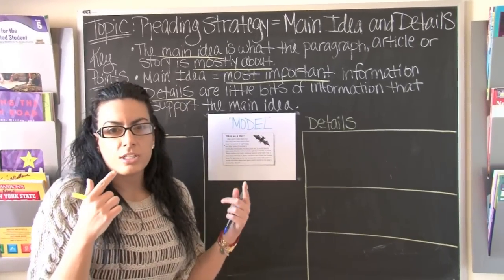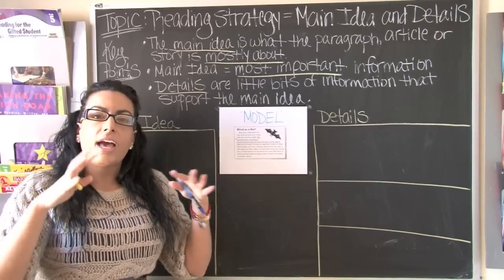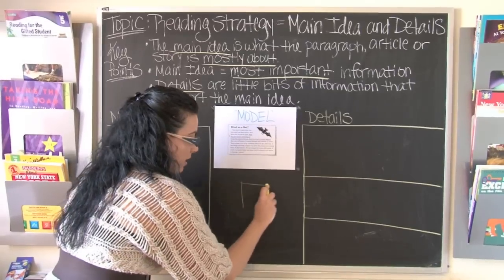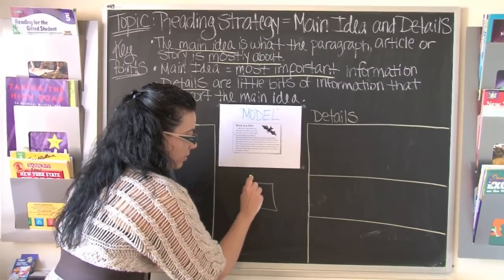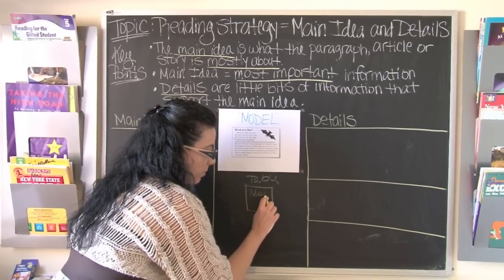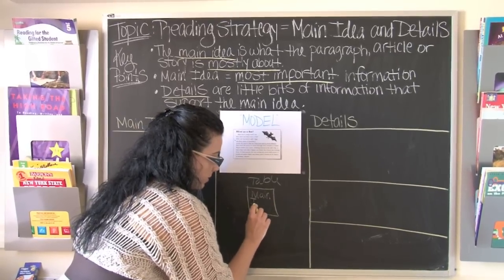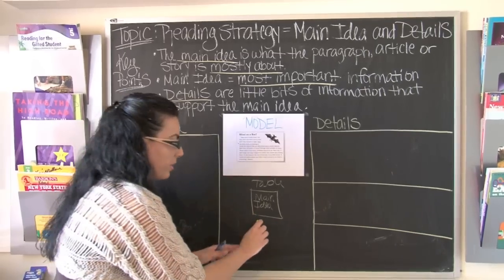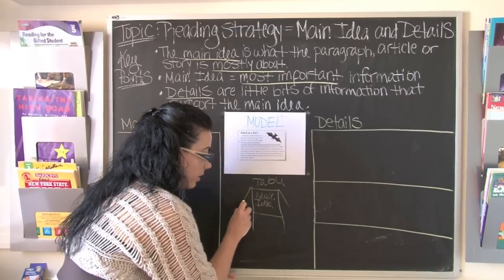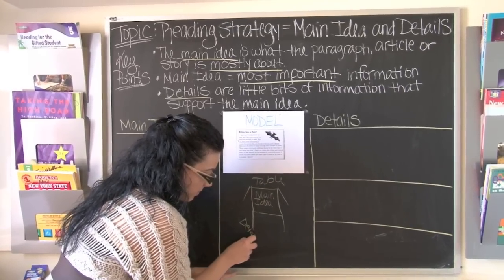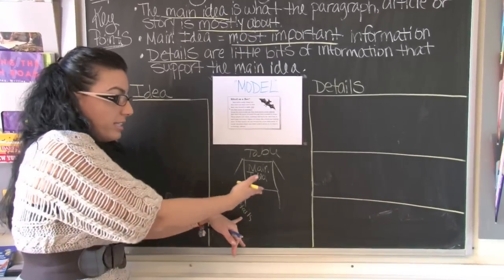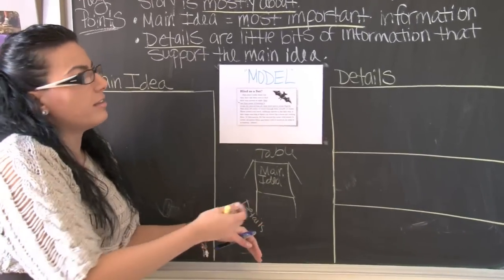When I teach my students at school to think about details and main ideas, think of it as like a table. Try to visualize a table in your mind. This is my table, and the main idea is the most important part. This is the top of the table, and the legs, which support the table, are the details. So it supports your table. You wouldn't have a table to eat on if you didn't have details.